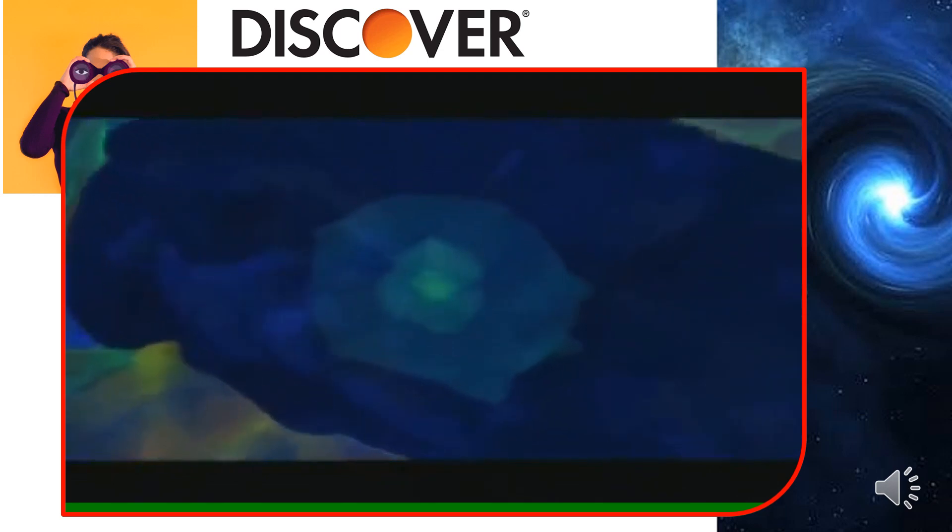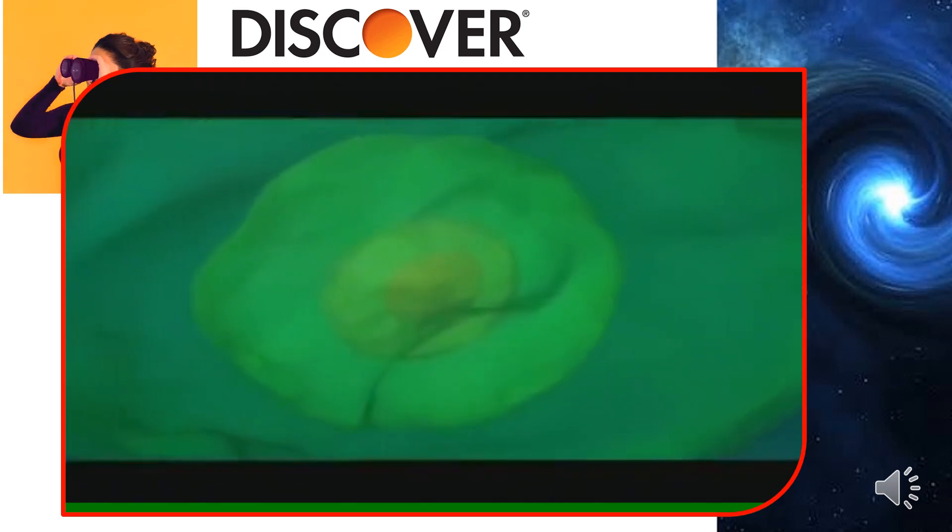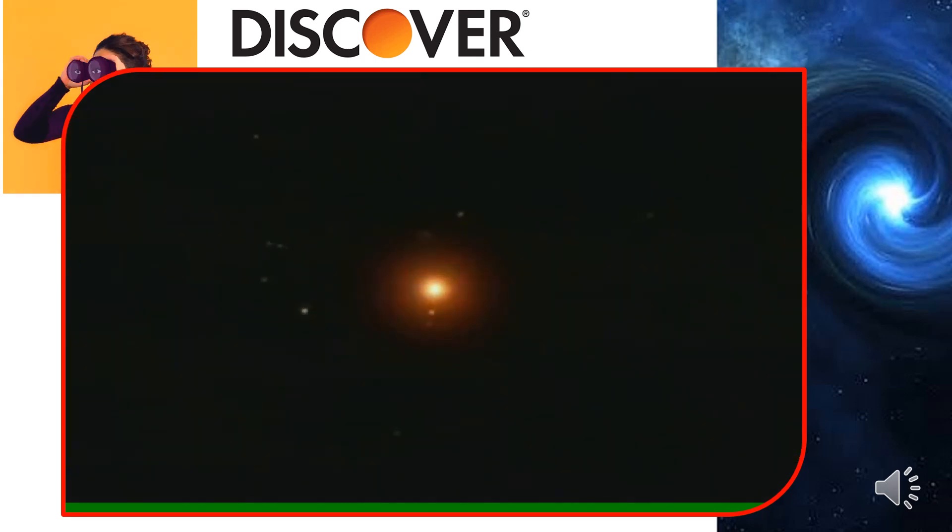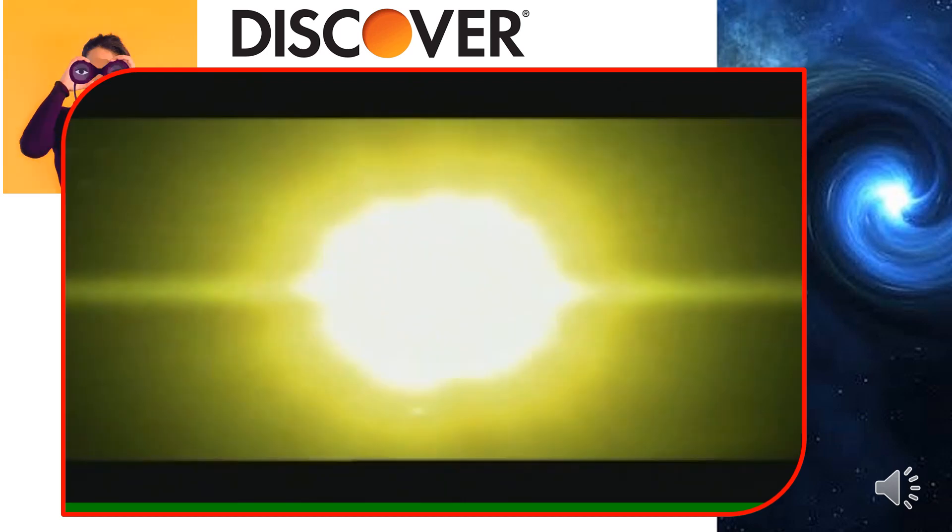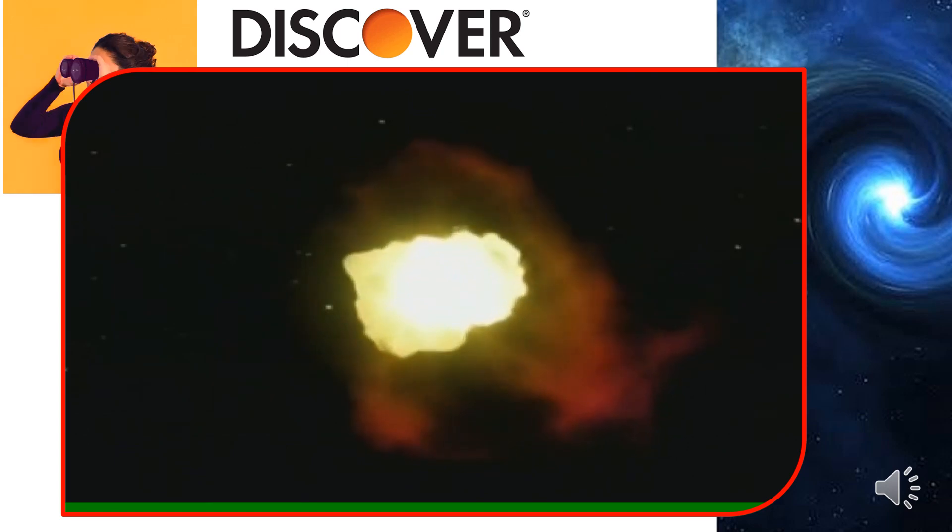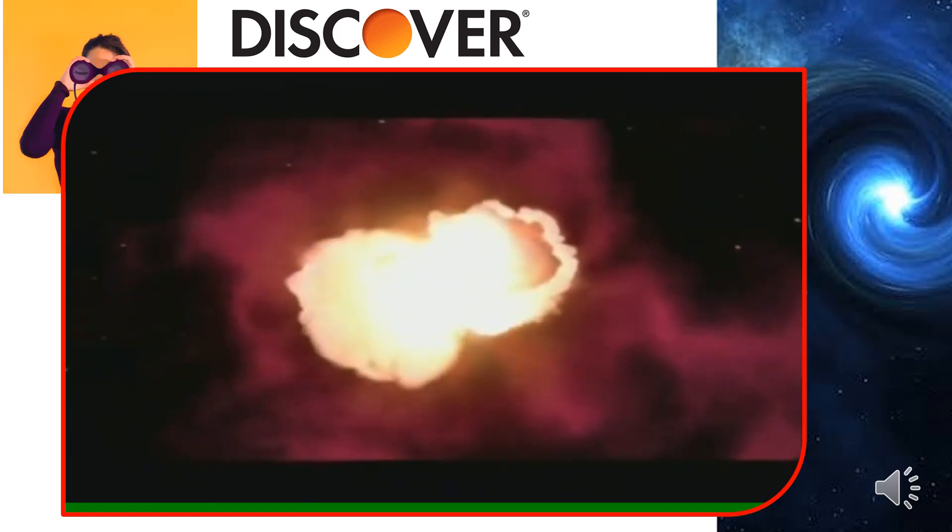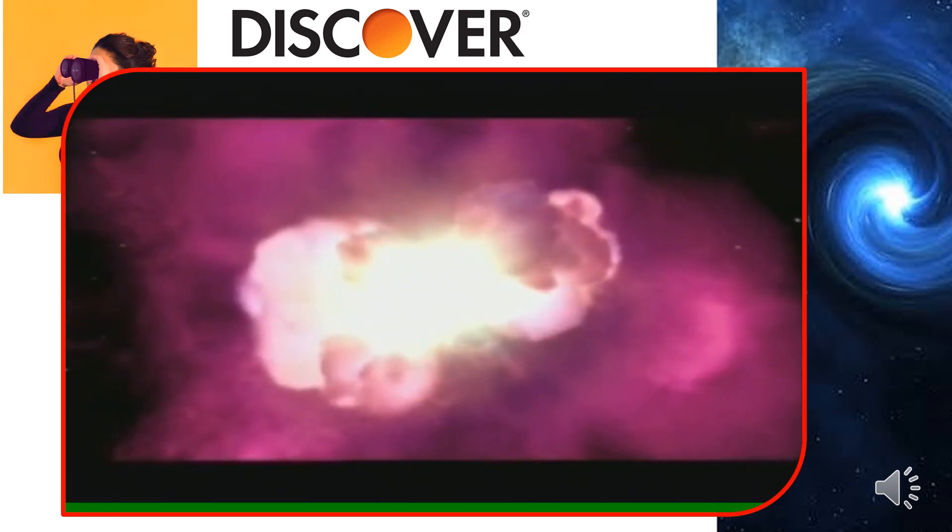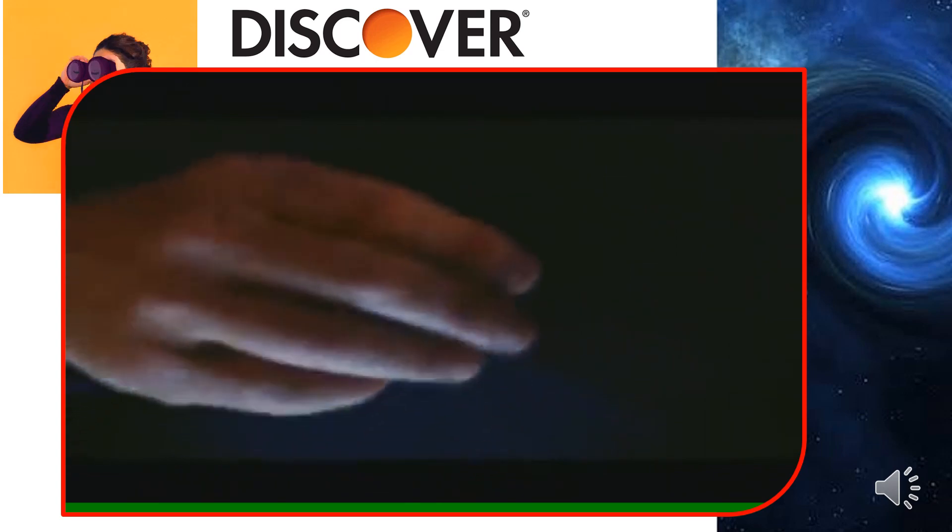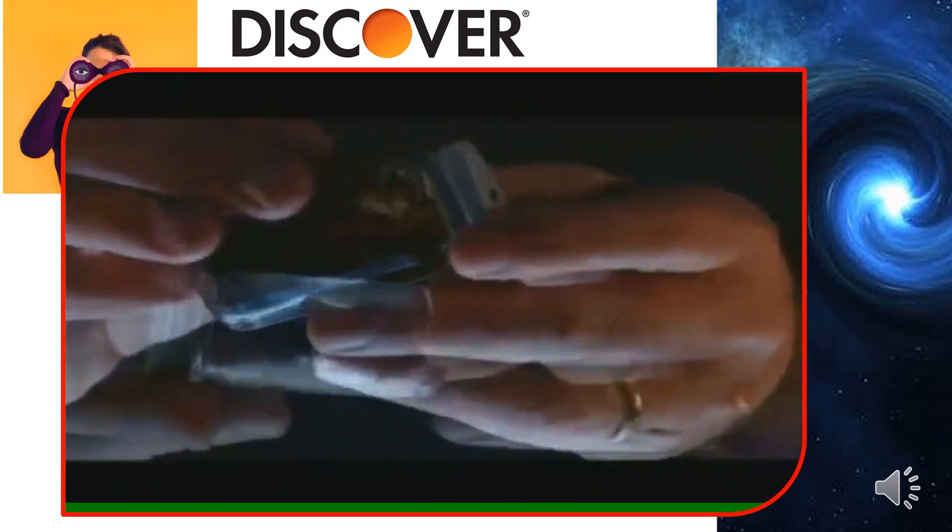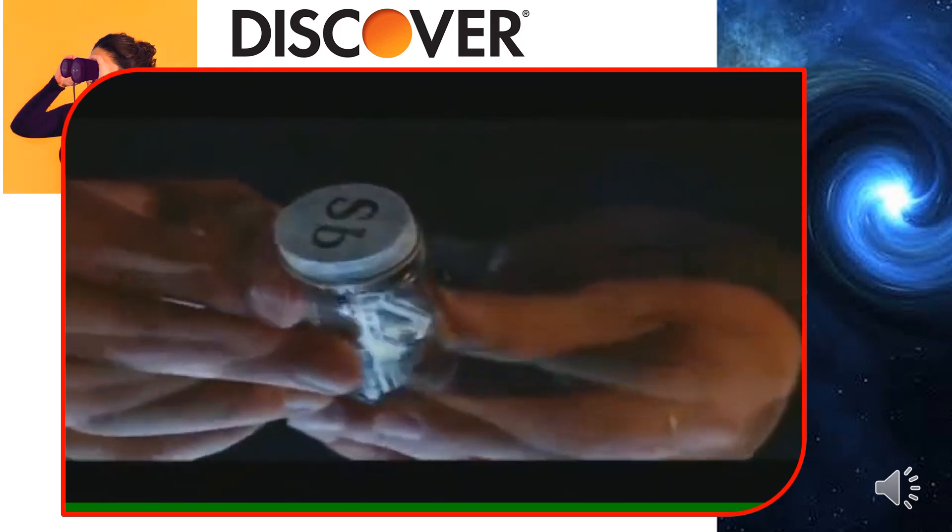As hydrogen piles on, the central region grows more and more dense until something brand new lights up the universe. A star. These first stars are hydrogen giants, 100 times or more larger than our own sun. Such massive stars are short-lived, 2 or 3 million years at the most, and they go out with a bang. An explosion so big, they've been dubbed hypernovae. And it's with these cataclysms that the universe begins to accumulate the building blocks of life.